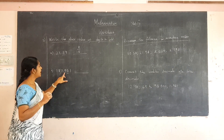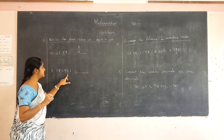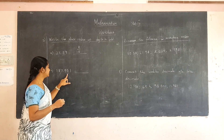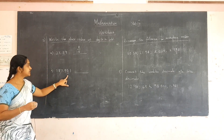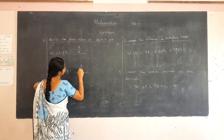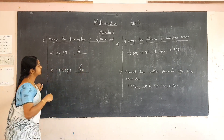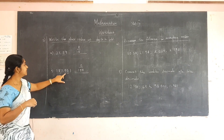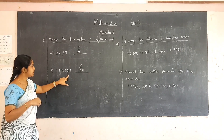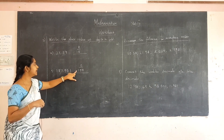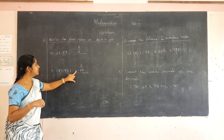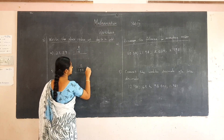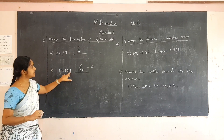Here after the decimal point we are having nine, zero, one. We have to divide that number by hundred. Zero by hundred is the place value of zero. The place value of zero is the hundredths place, so zero by hundred is the place value of zero. Zero by hundred is nothing but zero, so the place value of zero is zero.